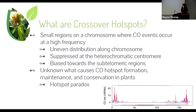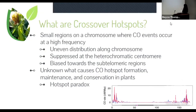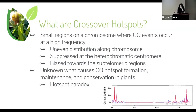The last question I want to answer is: what are crossover hotspots? These are small regions on a chromosome where crossover events occur at a relatively high frequency. Crossover hotspots are unevenly distributed across the chromosome. As you can see in this diagram, they are mostly suppressed towards the center or centromere region, with spikes towards the subtelomeric regions. As of right now, we don't really know what causes hotspots to form, what maintains them, or what conserves them.